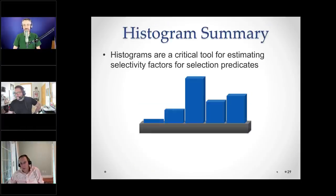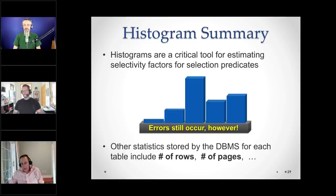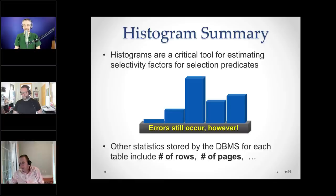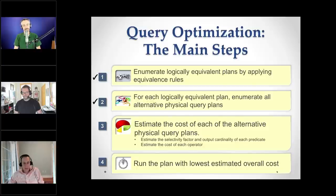Histograms are really, really critical, and errors still occur — especially with correlated attributes, which I'll come back to. Other statistics stored by the database system include the number of rows, the number of pages in the table, the number of distinct values in a column, the number of nulls in a column, and flags like whether an attribute is null in a table. There are a large number of statistics the query optimizer depends on.